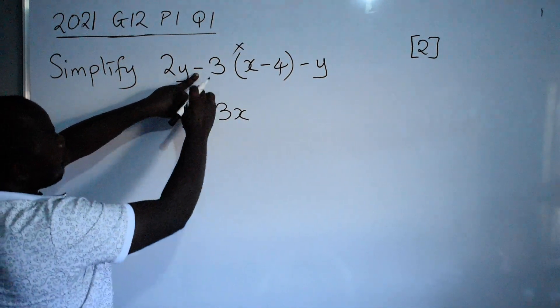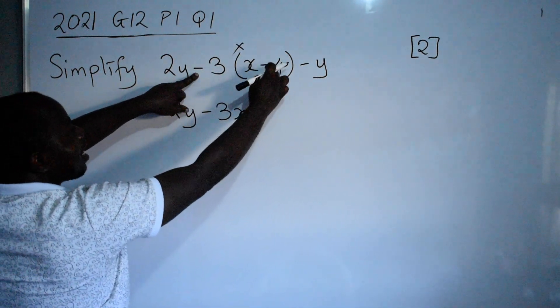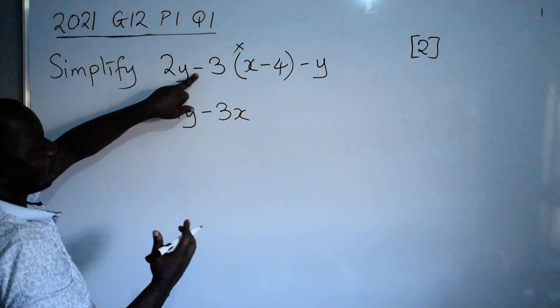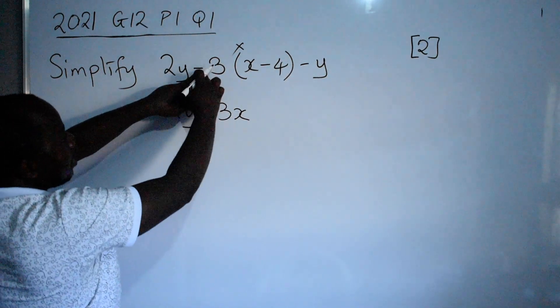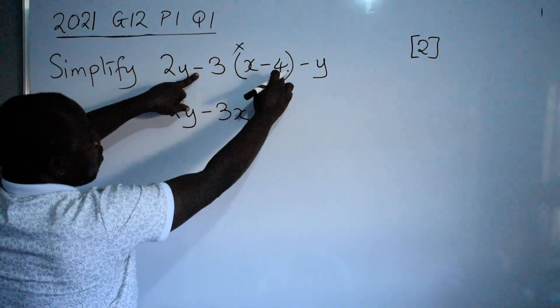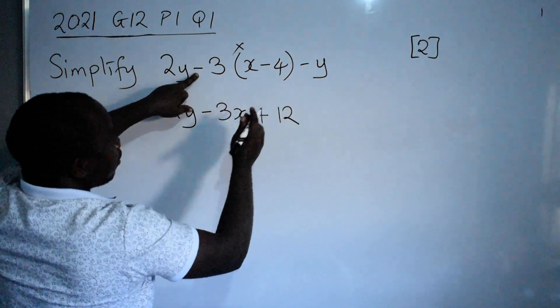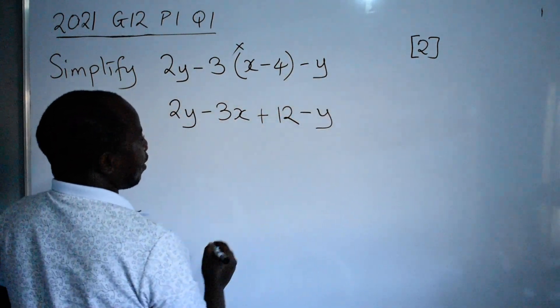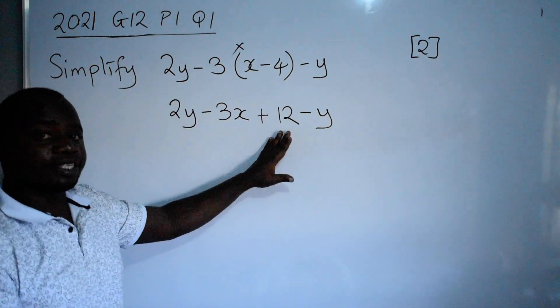Then we have negative 3 times negative 4. What you do here is you multiply signs on their own. Negative times negative positive. 3 times 4 gives us 12. You are done. Outside we have minus y. So here brackets have gone.